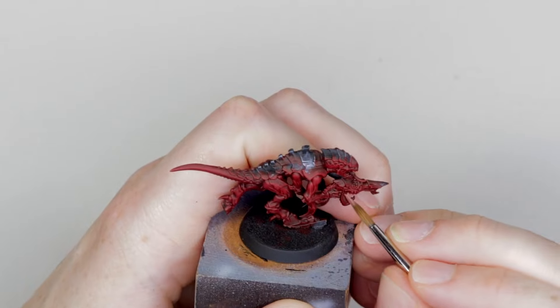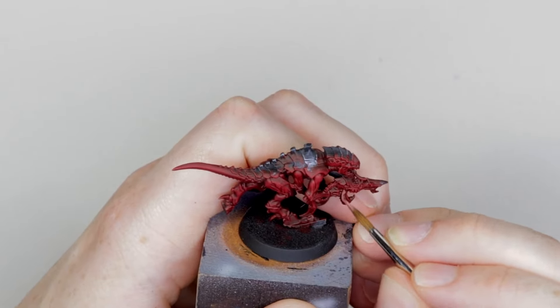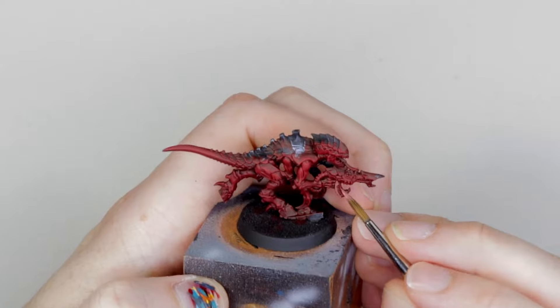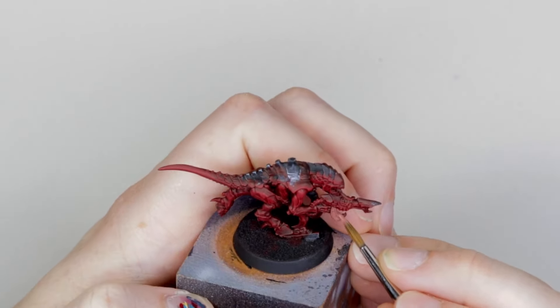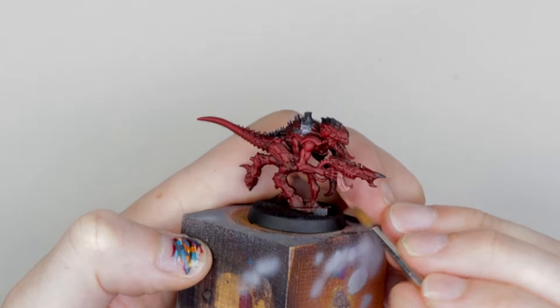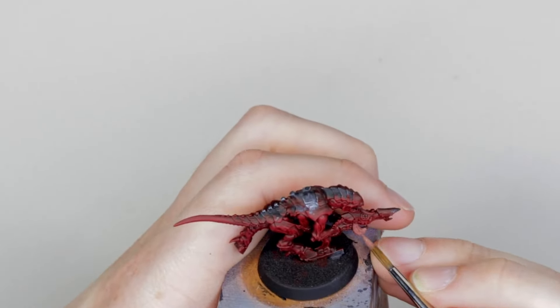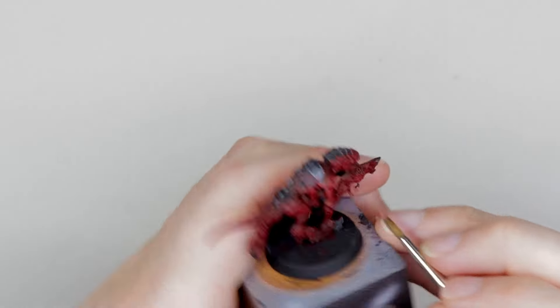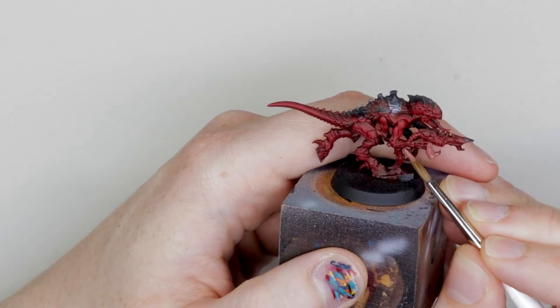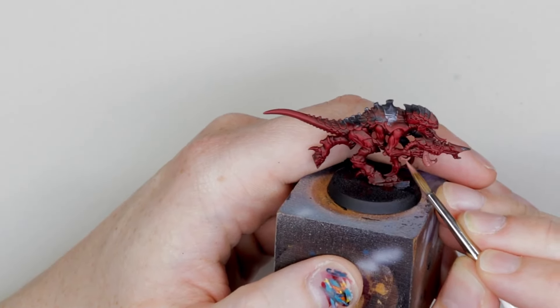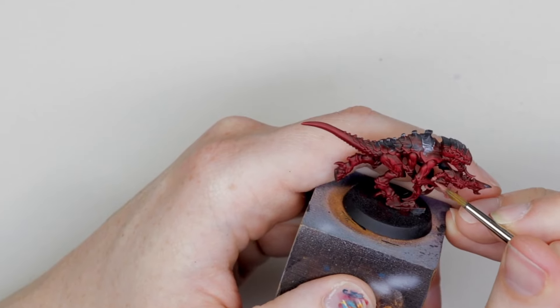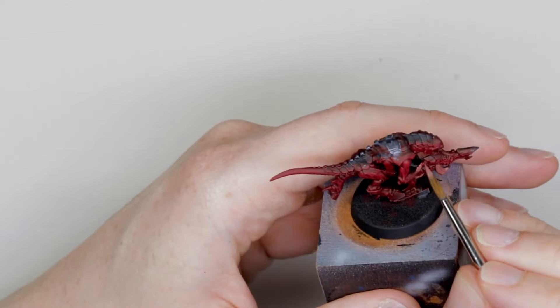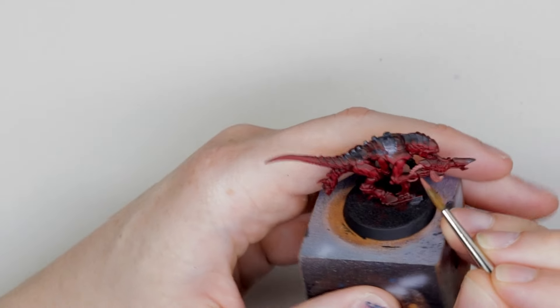That's the armor panels done. We're going to grab Bugman's Glow. My model has gone back in time here. I did this in a different order, but for the sake of continuity of the tutorial, I'm going to show you this step here. We're going to paint Bugman's Glow onto the gun and also the vents in the arms and the legs. Get a nice cover in that. Try to be careful when you're painting in the vents. You don't want to get this onto the skin, but if you do, just go in with Khorne Red and neaten it back up.